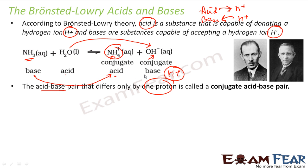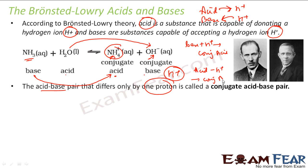The acid will be the conjugate base, and the base will be the conjugate acid. So on a base, if you add H+ it becomes the conjugate acid. On an acid, if you subtract H+ it becomes the conjugate base. The rule is pretty simple: the difference is only the H+ ion. If you add H+ to a base, that compound now has the potential to give H+ back and becomes an acid.